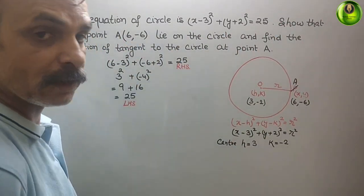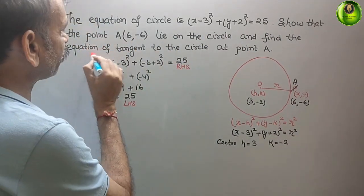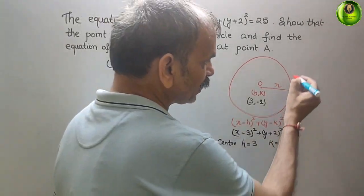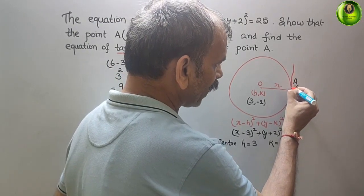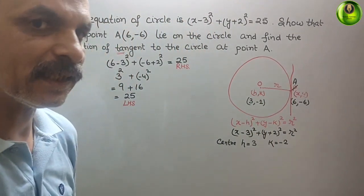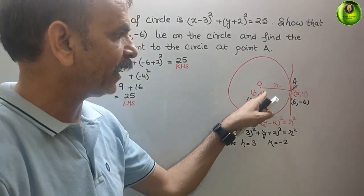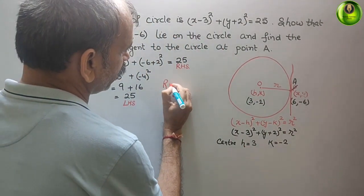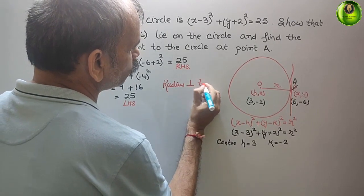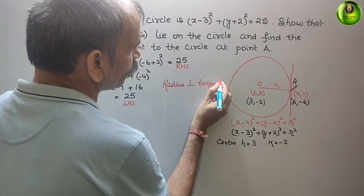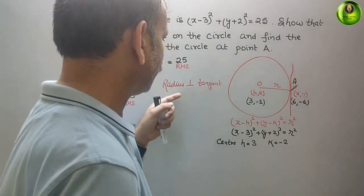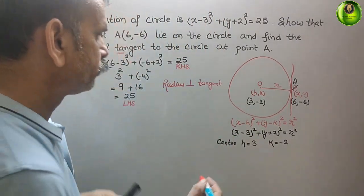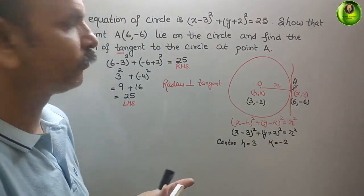Next, find the equation of the tangent to the circle at point A. There is a tangent — one line which passes through A. We already know that the radius is perpendicular to the tangent. That means the slope of the radius multiplied by the slope of the tangent equals -1.